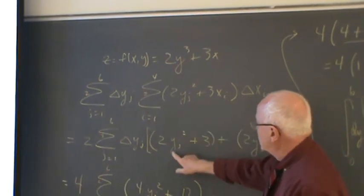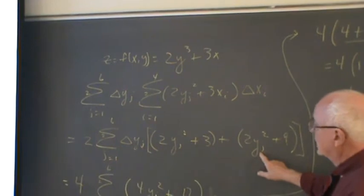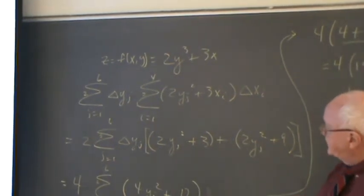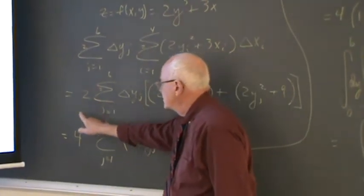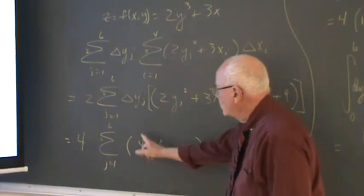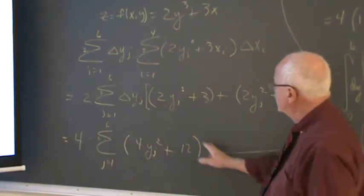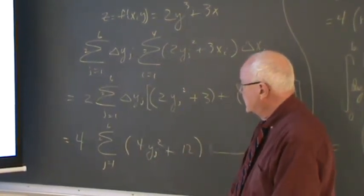So when x is 1, I'll get 2yj squared plus 3. And when x is 3, I'll have 2yj squared plus 9. So when I add those together and bring the delta y out, which is also a 2, I'm going to get 4 times the summation of j from 1 to 6 in steps of 2 of this added together, which is 4y sub j squared plus 12.